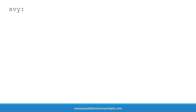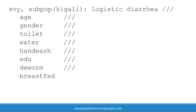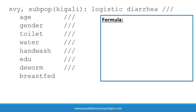The command for logistic regression with survey data is straightforward. Take account of the survey design with an SVY colon statement, then specify the logistic command. Next, list the outcome variable — note we can only have one outcome variable per model — and then list all covariates. We can optionally incorporate a subpopulation statement in the SVY colon statement to analyze a subset of the sample.